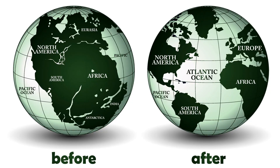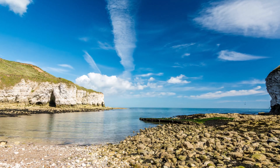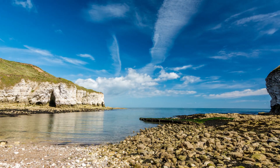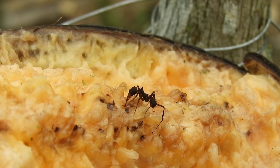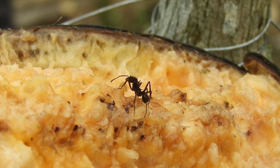When ants first came into existence, the world consisted of a supercontinent. Eventually, the continental drift occurred, where the supercontinent Pangaea drifted apart. This separation of new continents split up the ants. They faced new environments and therefore went through a process called speciation.